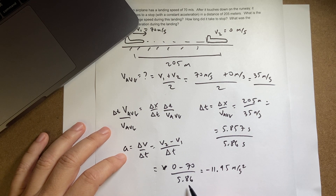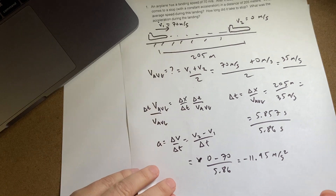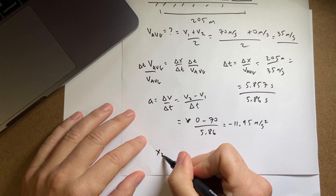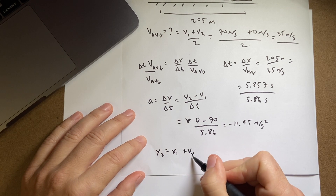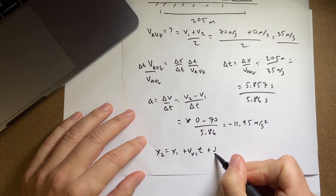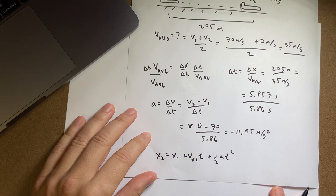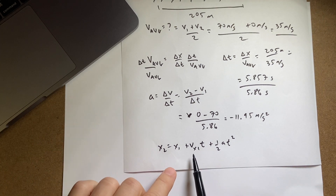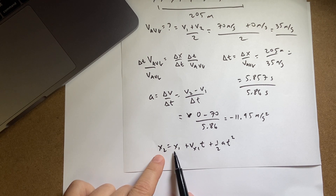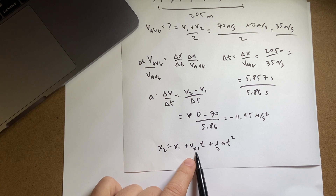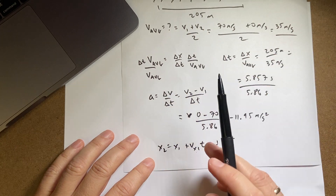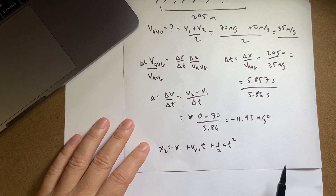This is meters per second divided by seconds, which gives meters per second squared. There is one other way you could do this — the kinematic equation: X2 equals X1 plus VX1·t plus one-half A·t squared. You could use that to solve for acceleration. The time is 5.86, the change in X is 205, and the initial velocity is 70. But in this case, it's easier to just use the values we already found.